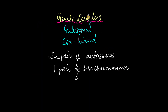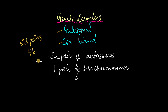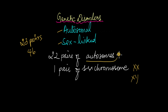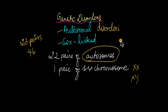When we talk about genetic disorders, there are two main types: autosomal and sex-linked. To understand what this means, you have to remember that we have 23 pairs of chromosomes — 46 chromosomes — of which 22 pairs are autosomes and one pair is the sex chromosome, which is the XX or XY part. If the mutation occurs in the genes in any of these autosomes, that is known as an autosomal disorder. If the mutation occurs within the X or the Y chromosome, that is known as a sex-linked disorder.